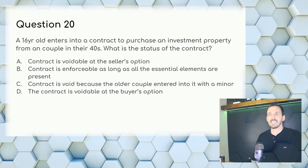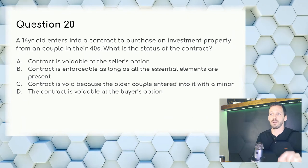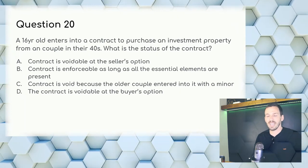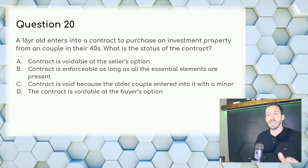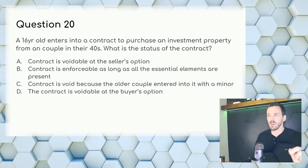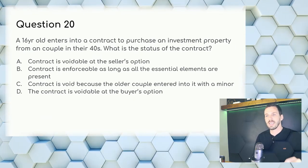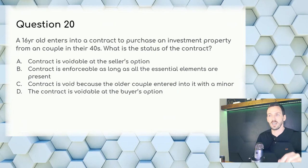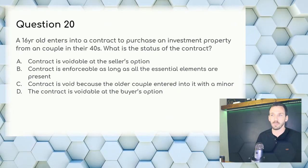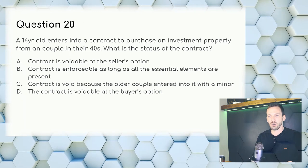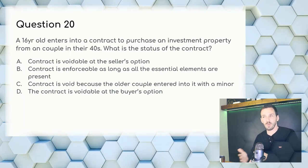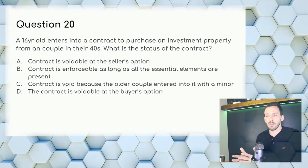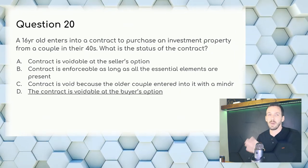Question 20: A 16-year-old enters into a contract to purchase an investment property from a couple in their 40s. What is the status of the contract? B states the contract is enforceable — it is to a degree, but that answer isn't the best. Answer: D — the contract is voidable at the buyer's option, the kid's option. The contract can only be voided by the minor.